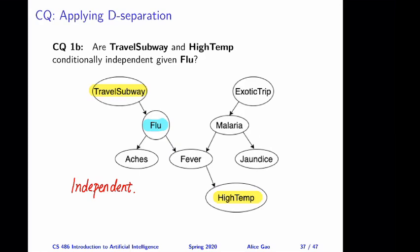We can get this by applying rule one twice. The connection between the two variables is again this chain. Now if we look at the variable flu, we observe the value of flu, so it does block this path. We can stop right there, because as soon as we find a variable that blocks the path, the path is severed, and there are no other paths connecting these two variables. Therefore these two variables must be independent from each other. If you want to verify for fever: because we do not observe fever, fever does not block the path — but that doesn't matter since the path is already severed at flu.